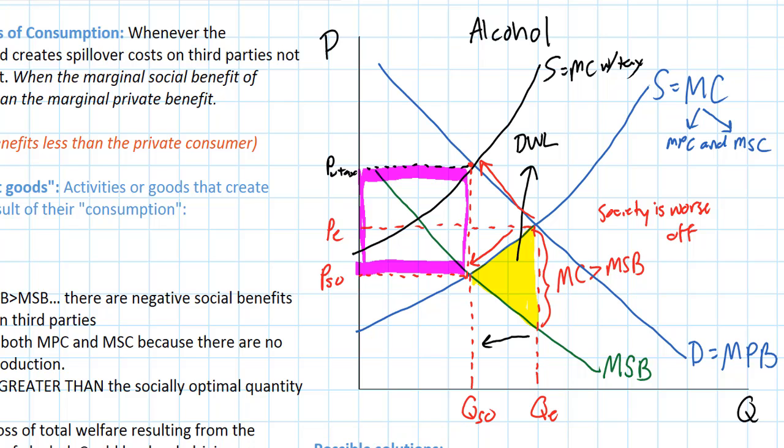The solution that we illustrated was a corrective tax, which creates tax revenue too, outlined in purple, but eliminates the deadweight loss rather than creating a deadweight loss as in the case of taxing a good that does not create negative externalities.